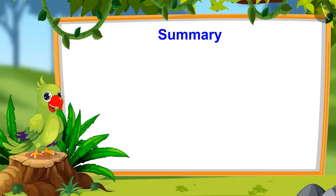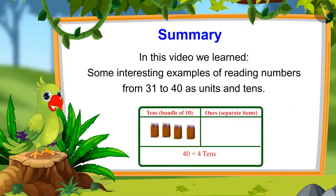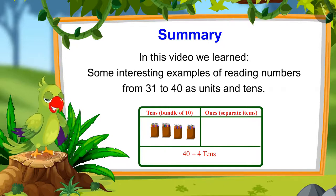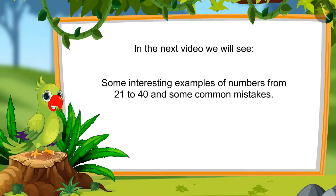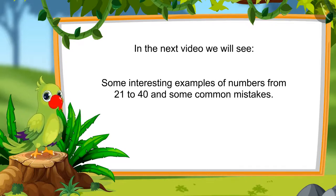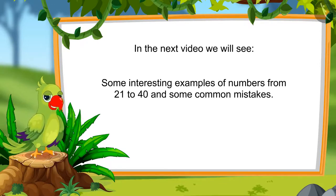So, children, that was all for today. In this video, we saw numbers from 21 to 40 and some interesting examples of reading those numbers as units and tens. In the next video, we will see some interesting examples of numbers from 21 to 40 and learn about some common mistakes which should not be done. Till then, goodbye friends.